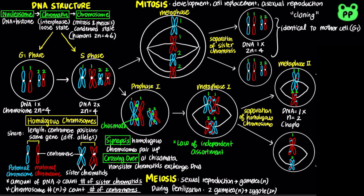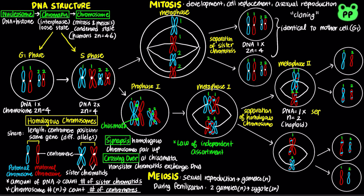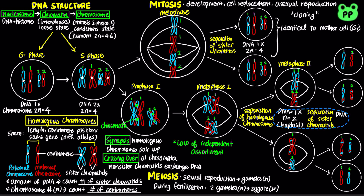Meiosis II is similar to mitosis, in which individual chromosomes are aligned at the metaphase plate. Sister chromatids separate, producing four haploid daughter cells that are genetically distinct from each other and from the G1 mother cell.